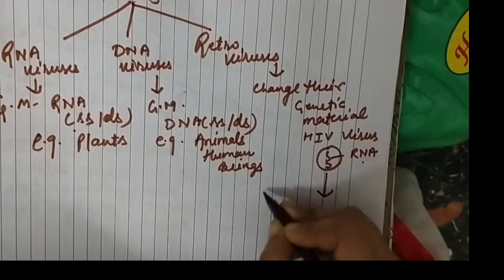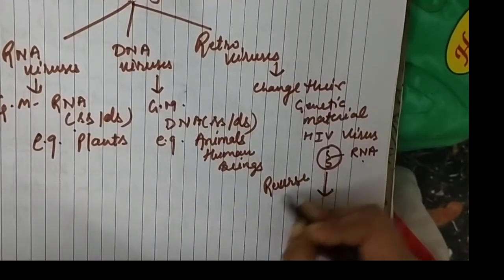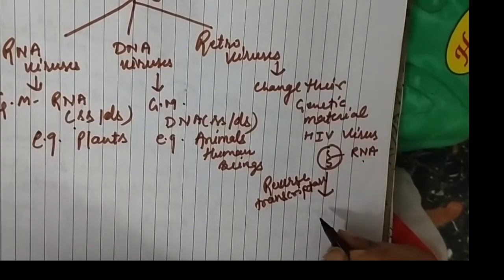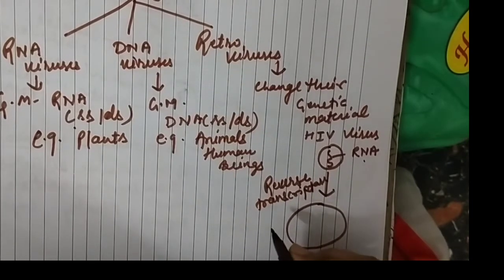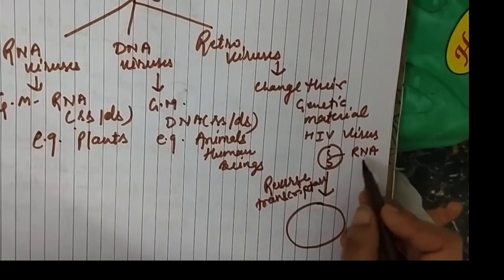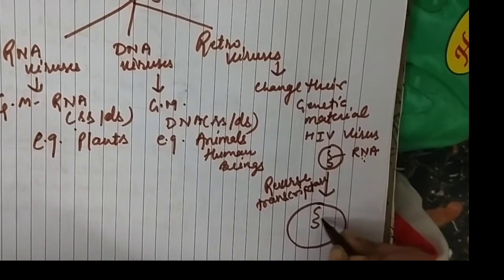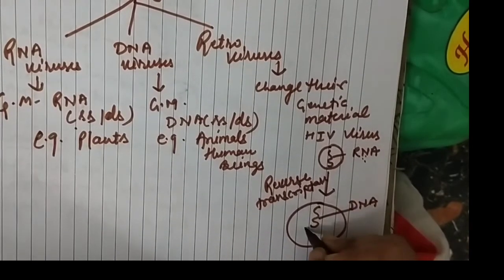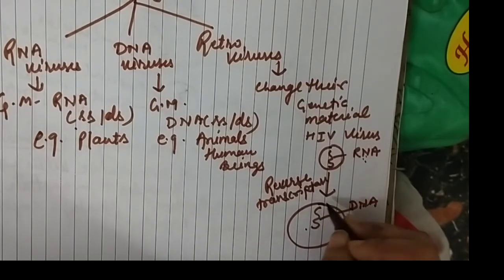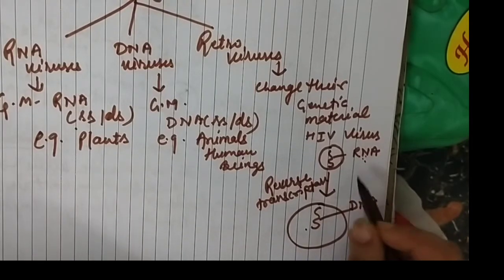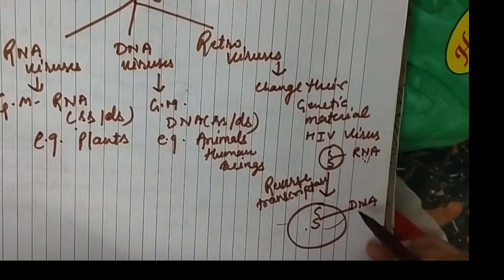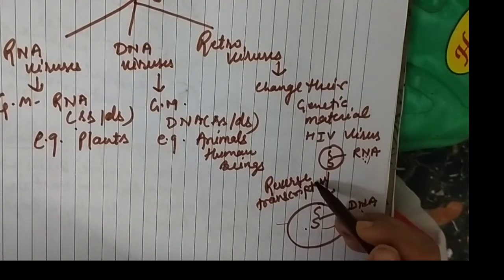It has a specific enzyme known as reverse transcriptase. When it enters into our cell, by using this reverse transcriptase enzyme, it changes its genetic material from RNA to DNA. This DNA of the virus then mixes with our DNA and starts to multiply and infect our system. That is why these are called retroviruses. The process by which RNA changes into DNA is known as reverse transcription.